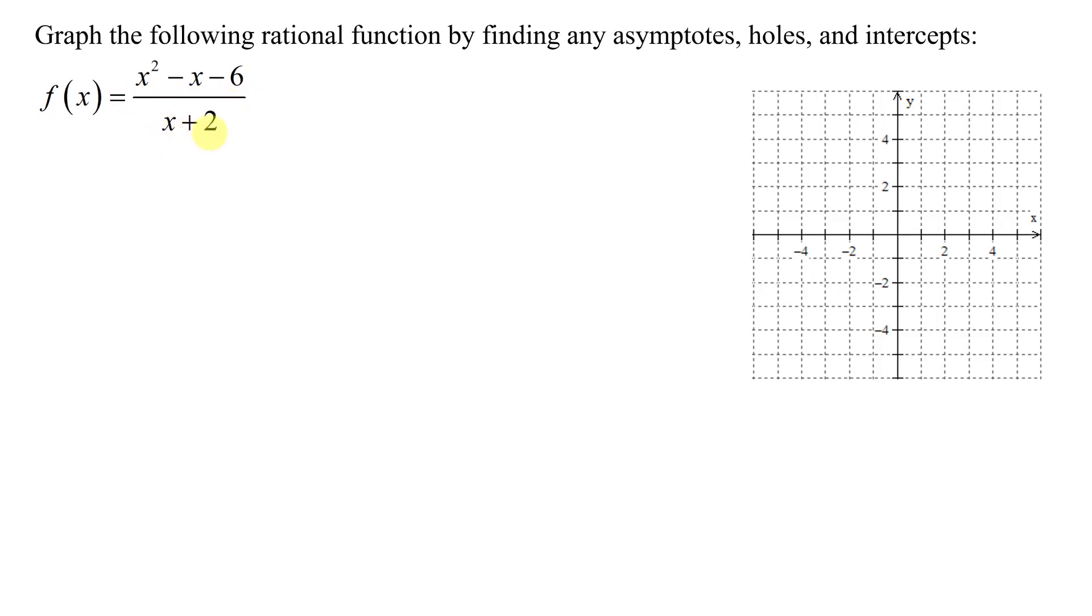Now be careful when you look at this function. It's easy to think I'm going to have a vertical asymptote when the denominator equals 0, but that only applies if your function is in simplest form. The first thing we have to do is see if we can simplify our function.